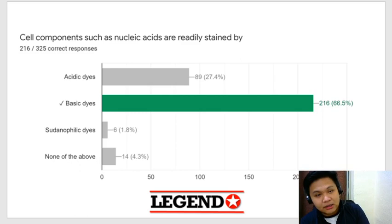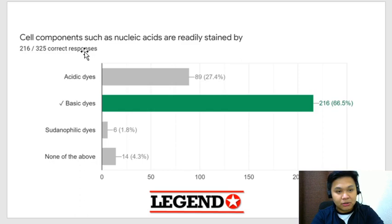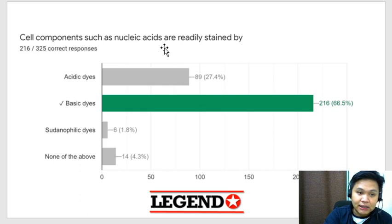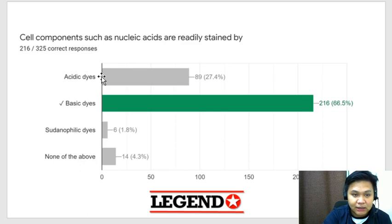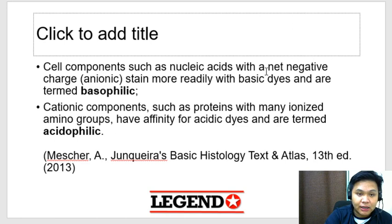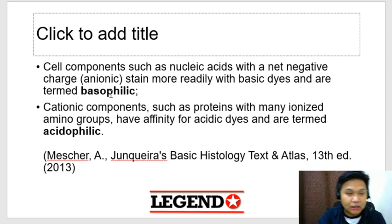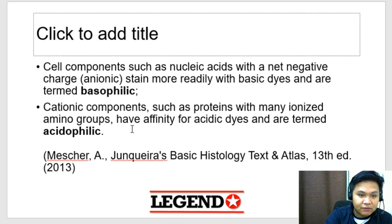Cell components such as nucleic acids are readily stained by basic dyes. Marami pa rin sumagot ng acidic — tandaan niyo guys, ang principle dito parang magnet: opposites attract. Kapag ang cell component mo ay nucleic acid, acidic yan, so ang stain or dye na attracted sa kanya dapat basic. Pag acidic component, basic dye; pag basic component, acidic dye — vice versa. Cell components such as nucleic acids with a net negative charge stain more readily with basic dyes and are termed basophilic. Whereas kapag cationic, such as proteins, they have an affinity for acidic dyes and are termed acidophilic.